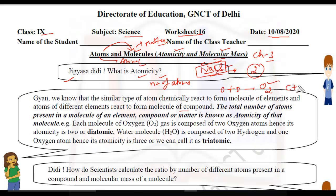And if you have carbon plus oxygen, it forms carbon dioxide — here the atoms are different (carbon and oxygen), so it is a molecule of a compound. The total number of atoms present in a molecule of an element, compound, or matter is known as the atomicity of that molecule.